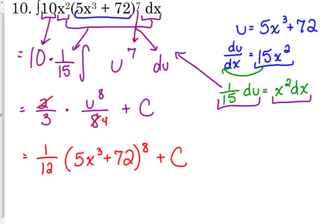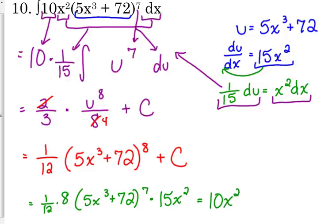And we can check it. You can always check your integration by taking the derivative. It takes like 30 seconds. 1/12 times 8, chain rule. Keep the inside the same. Subtract 1 from the exponent. Multiply by the derivative of the inside. Derivative of the constant is 0. 8 times 15 is 120. 1/12 of 120 is 10. When the x squared moves to the front, there is what we just integrated.